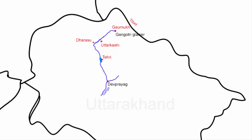Now we will see the route of river Alakananda. The river Alakananda originates from the Satopanth glacier and Bhagirathi Kharak glacier — these glaciers are part of the Greater Himalayas. The river initially flows southeast and after reaching the village of Mana it turns south and heads towards the holy town of Badrinath.